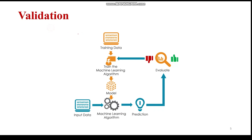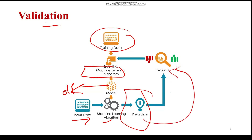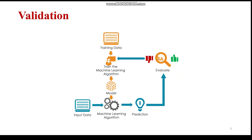Before proceeding further, let's discuss briefly about validation. When we talk of validation, it means we are having certain training data, and for that training data we have a machine learning algorithm that is getting a model. That machine learning model is trained with the training data. Once that is done, we get the output as a model, and then we need to check how much accurate and efficient our model is.